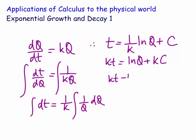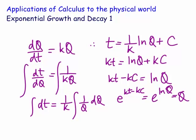Then we move the kc across. We end up getting kt minus kc is equal to ln Q. Then we raise everything to the power e. So e to the kt minus kc is equal to e to the ln Q, which hopefully we know is actually Q. They are inverse functions.